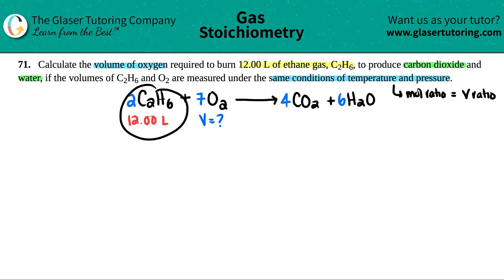So start with what you're given. I have 12.00 and that's liters of the C2H6, right? And now times by the ratio. Now you can use your mole ratio to solve the problem, right? Liters of the C2H6 go on the bottom and the liters of O2 goes on the top, right?